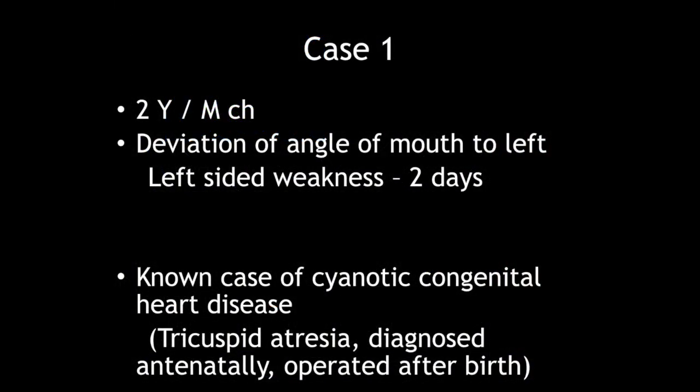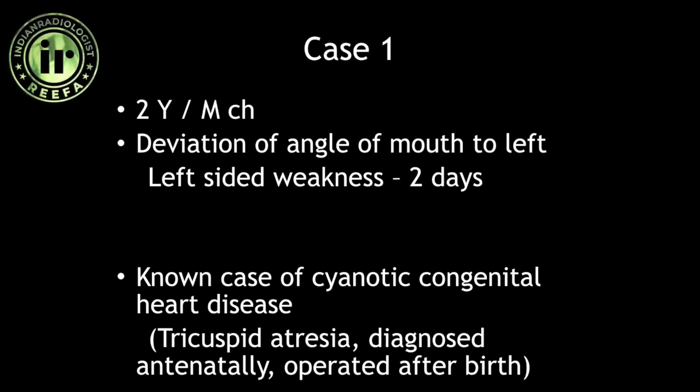This is a two-year-old male child who had some amount of deviation of the angle of mouth to the left, which was followed by left-sided weakness over a period of two days. The patient was a known case of congenital heart disease, diagnosed to have tricuspid atresia antenatally, for which he was operated after birth.